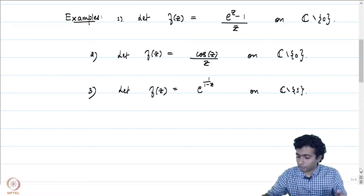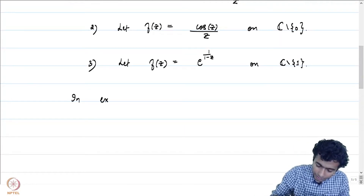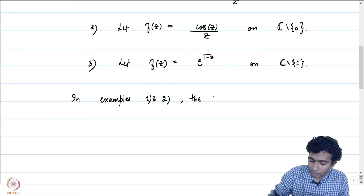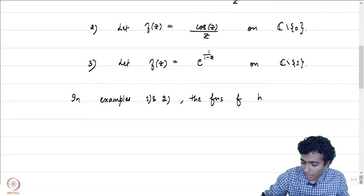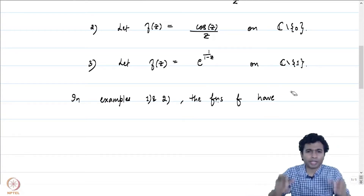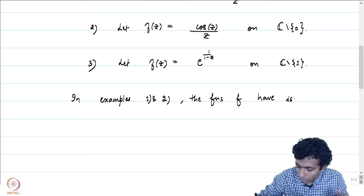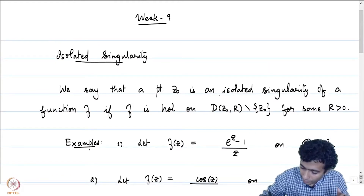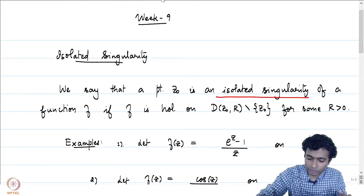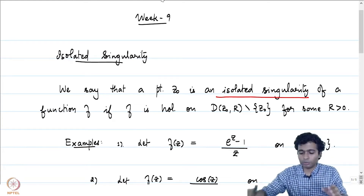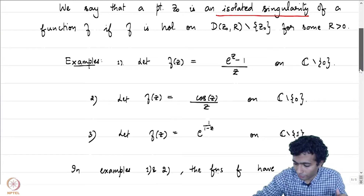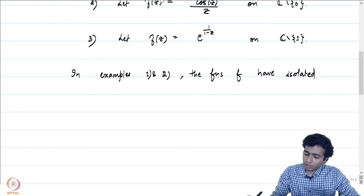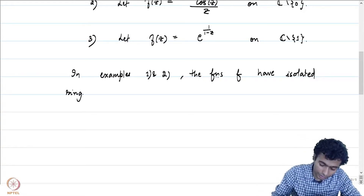So let me write down the singularities. In examples 1 and 2, the functions f have isolated singularities. Sometimes the word 'isolated' is dropped, but it is always the isolated singularities we will be referring to when we say singularities. Whenever we use the word singularity, we mean isolated singularities in this course. The functions have isolated singularities at z0 = 0, and example 3 has isolated singularity at z0 = 1.